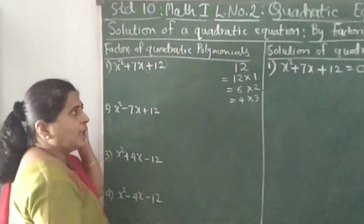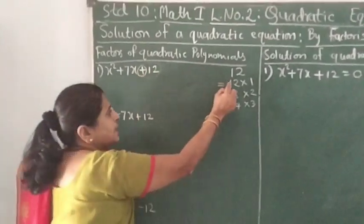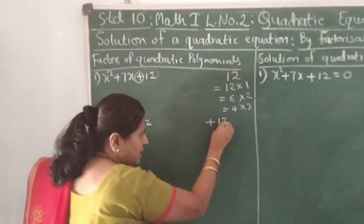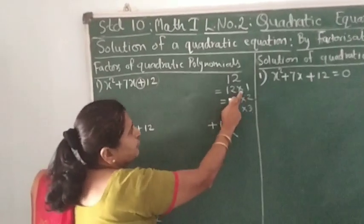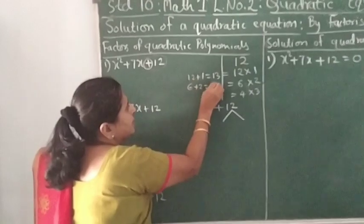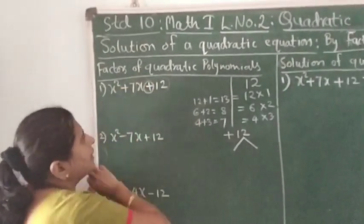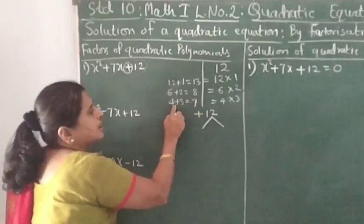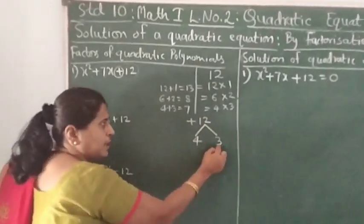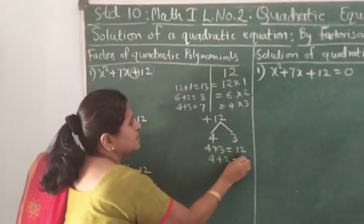Now, which factors do we select? We have to concentrate on the sign of 12. Since the sign is plus, we should select factors whose addition equals 7, the middle term coefficient. Checking: 12 + 1 = 13, 6 + 2 = 8, and 4 + 3 = 7. So we select 4 and 3, because the product of 4 and 3 is 12 and the sum is 7.